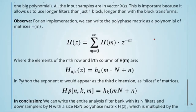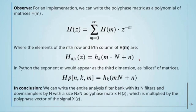For an implementation, we can write the polyphase matrix as a polynomial of matrices H, where the elements of the nth row and the kth column of H are given here. In Python, the exponent m would appear as a third dimension or as slices of matrices. In conclusion, we can write the entire analysis filter bank with its N filters and downsampling by N with a size N-by-N polyphase matrix H, which is multiplied by the polyphase vector of the signal X.